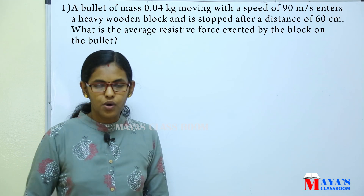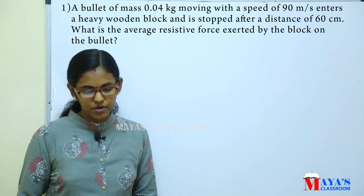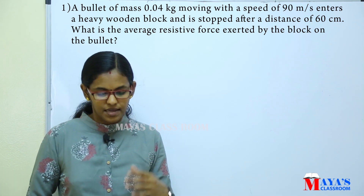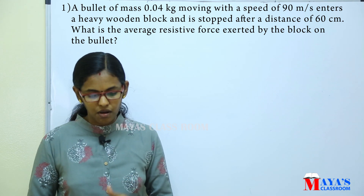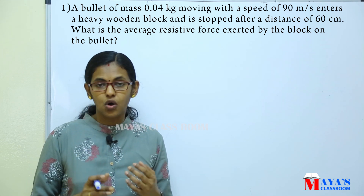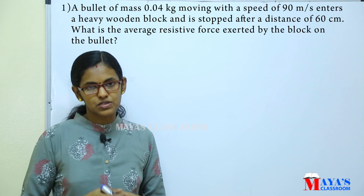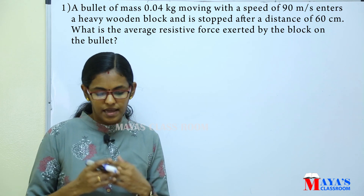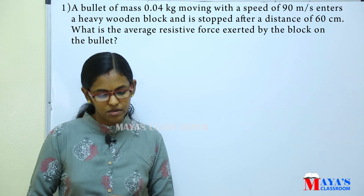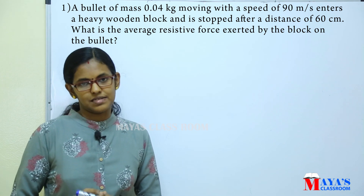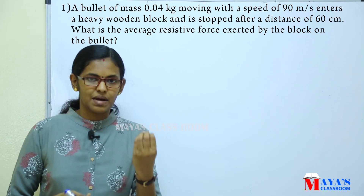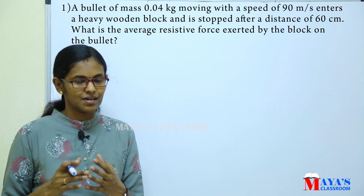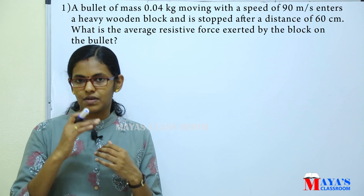A bullet of mass 0.04 kg moving with a speed of 90 m per second enters a heavy wooden block and is stopped after a distance of 60 cm. What is the average resistive force exerted by the block on the bullet? The mass of the bullet is 0.04 kg, moving with a velocity of 90 m per second.